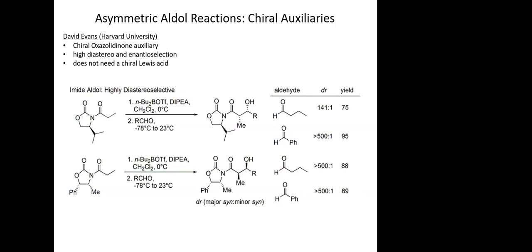Let me back up — it's indicated as syn here, meaning both groups are wedged or both are dashed. For this auxiliary with the groups going back, the major isomer has both the hydroxyl and methyl group coming up, and the minor product has those two on the same face as the groups going back. So there's no anti — I apologize for that — but it's still a phenomenal reaction.